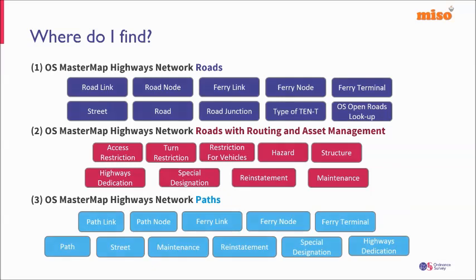In the Roads layer you have the road link, road node, and ferry link — features that were all part of ITN — plus ferry terminals. From the NSG you have the streets table, plus a road table listing all the road links that make up a road such as the A1 or M1. Road junction is a new feature: previously it was just a floating point, now it's a node on the network giving you the junction name and number on motorways. There's also T10 data — a European destination network — and an Open Roads lookup to link Highways data with OS Open Roads.